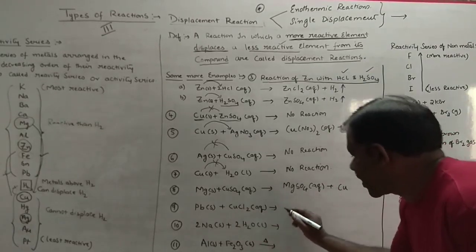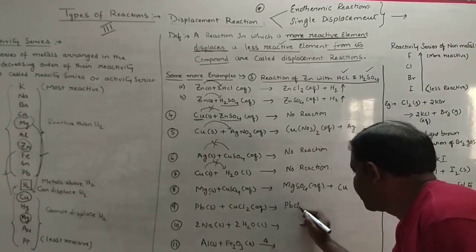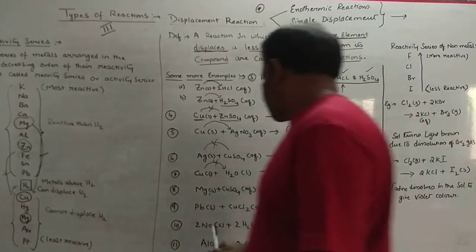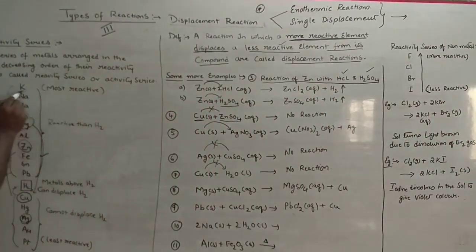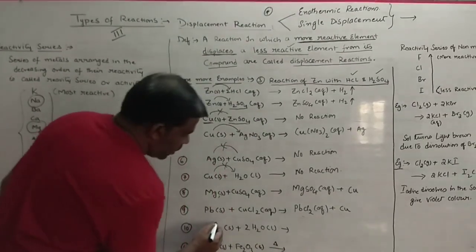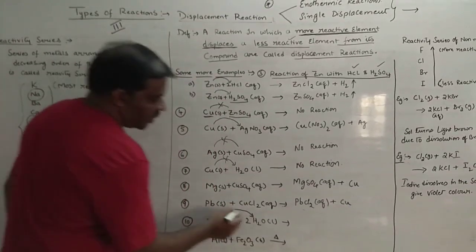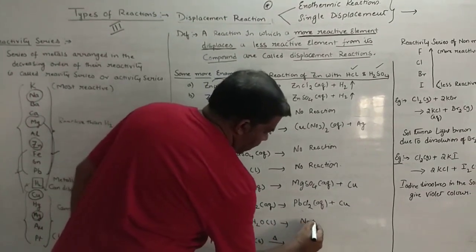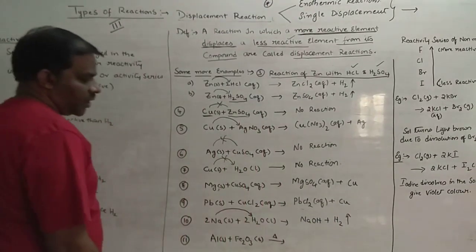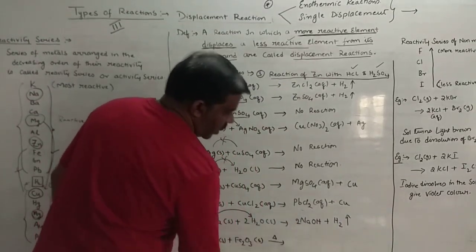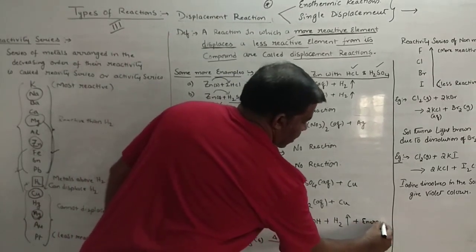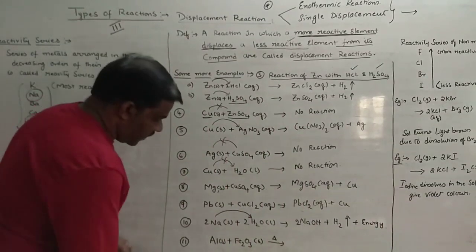In the same way, lead is more reactive than copper, so you get lead chloride in aqueous solution along with the formation of copper. Coming to sodium's reaction in water — sodium is more reactive than hydrogen, so sodium displaces hydrogen from water to form NaOH plus H₂. Hydrogen gas is released. When balanced, it is 2Na + 2H₂O → 2NaOH + H₂, and a lot of heat energy is also released. Displacement reactions are generally exothermic in nature.